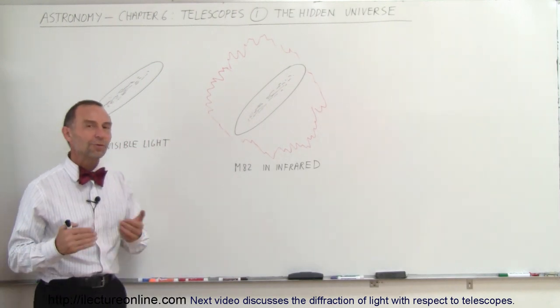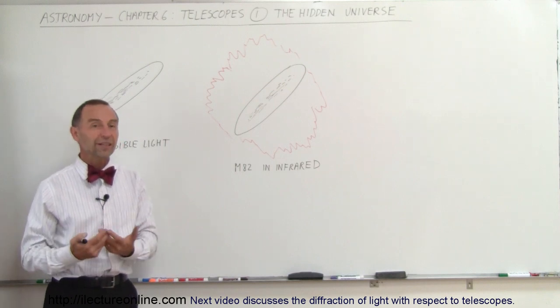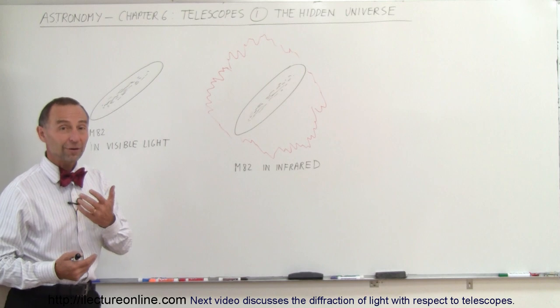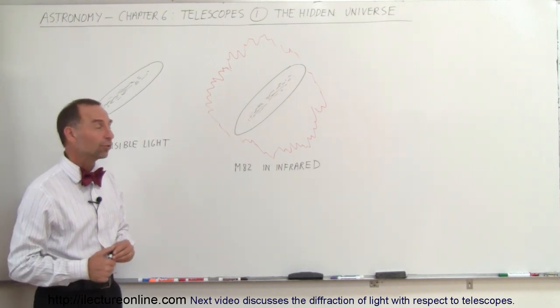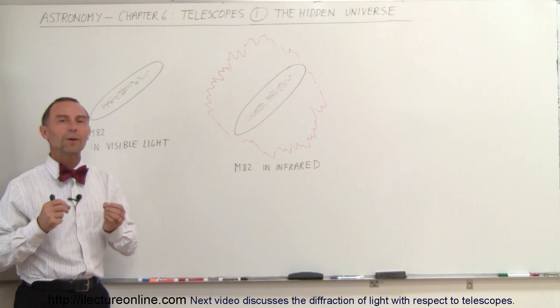Instead, we also look at the universe in various other types of telescopes. For example, infrared telescopes, UV telescopes, radio telescopes. Yes, and even gamma rays and X-ray telescopes. And what that does for us is it reveals things that otherwise would remain hidden to us.